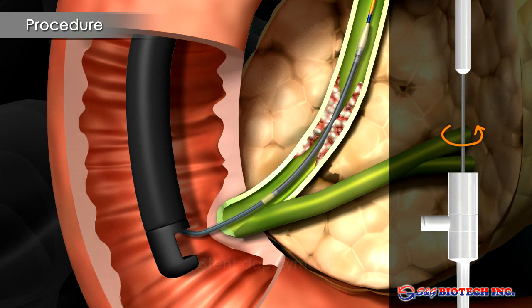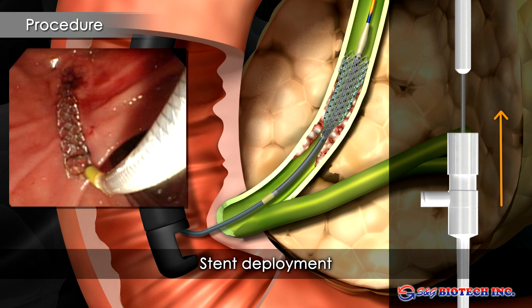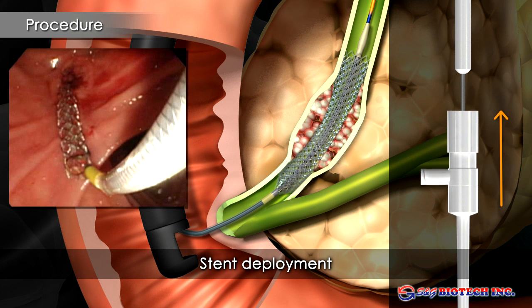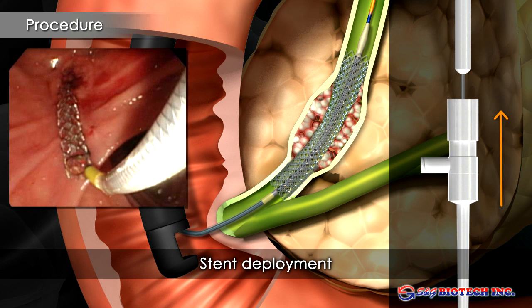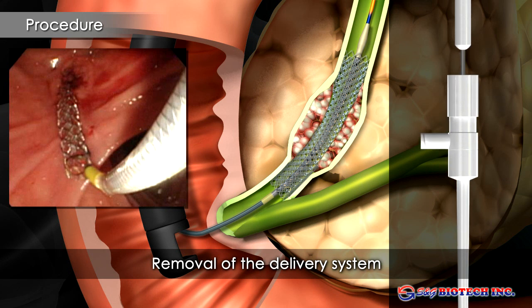The restraining sheet is unlocked and withdrawn slowly, maintaining stent position under real-time fluoroscopic control. After the stent is fully deployed, the delivery system is removed.